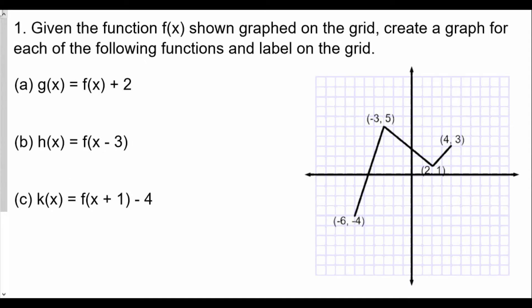So for f(x) plus 2, it means we're shifting up by 2. Which means our important coordinates, which are -6, -4, now become -6, -2. Our next coordinate, -3, 5, becomes -3, 7, because we're adding 2. Our next coordinate, 2, 1, becomes 2, 3, because 1 plus 2 is 3. And that fourth coordinate, 4, 3, becomes 4, 5.